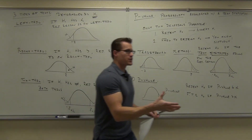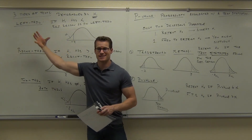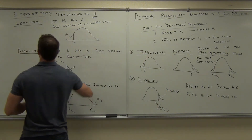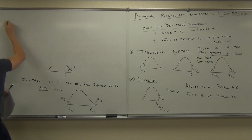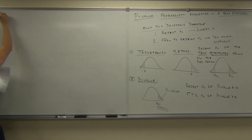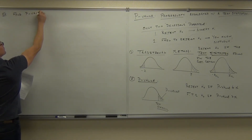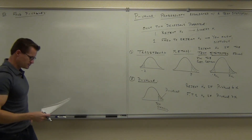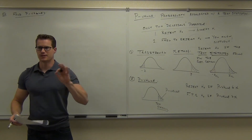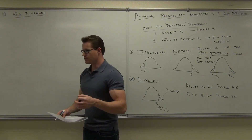Hopefully you understand the traditional method — we've already done an example with it. Traditional method works like this: you find critical values, you already have a test statistic, and you see where it falls. For the P-value method, there are really only three things to do. First, determine whether it's a left-tail, right-tail, or two-tail test. Second, find the P-value. Third, compare that P-value to alpha.